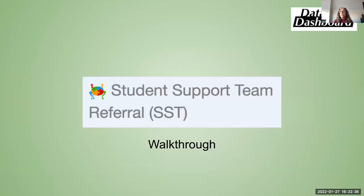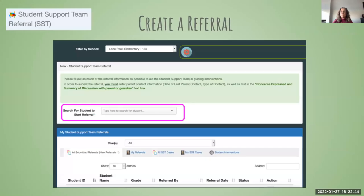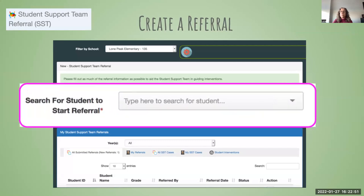I'm going to walk you through the SST referral process and how to use the SST module with your team. To create a referral, you simply go to find a student. As you type in the student's name, it's going to search your school database for that student. You don't have to know the entire name — start typing and anybody with that name will pop up so you can select the student you're starting a referral for.